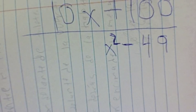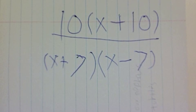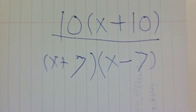Here's another problem. We can simplify the numerator into 10x plus 10 in parenthesis, and the denominator into x plus 7 and x minus 7, both in parentheses. When done with step 1, this is what you will get.